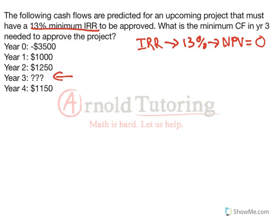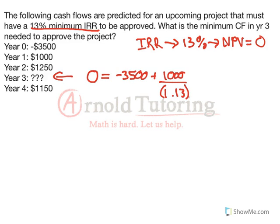NPV is just the present value of each cash flow discounted back to today, so I'm setting that to 0. That will be negative 3,500 — no discount needed there because it happens in year 0 — plus 1,000, which is a positive cash flow, so we start making money after the initial investment of negative 3,500. We discount this back one year at 13%, because we set our NPV to 0 which implies the internal rate of return.